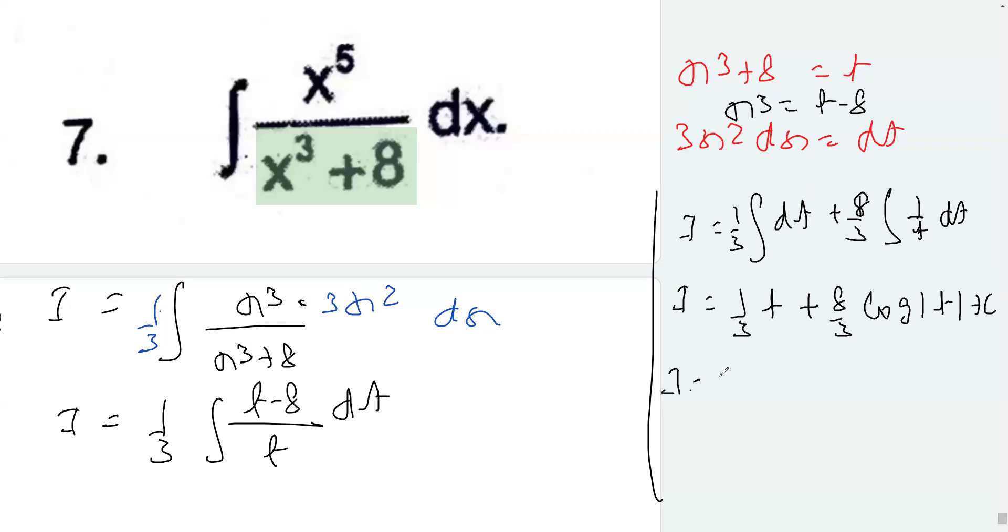So finally, I equals 1 by 3, replacing t with the value x cubed plus 8. You can write this as x cubed plus 8 over 3. This is 8 over 3 log mod x cubed plus 8 plus c. So this would be the final integration of this.